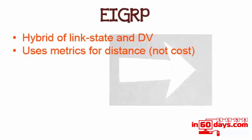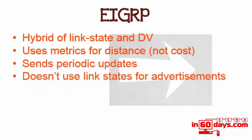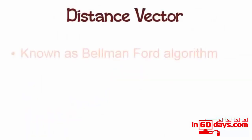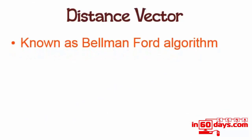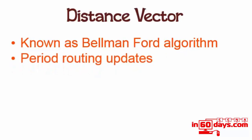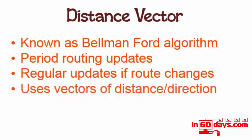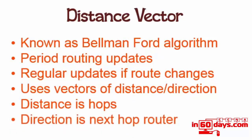For its metrics, EIGRP uses distance - unlike a link state protocol such as OSPF, it doesn't use cost. It does send periodic updates. It doesn't use link states for advertisements. Distance vector protocols use what is known as the Bellman-Ford algorithm. They do send periodic routing updates no matter what's happened on the network, even if there hasn't been a change. Regular updates are sent if the route changes - different protocols do this in different ways. They use vectors of distance and direction: the vector for distance is hops and the vector for direction is a next hop router.